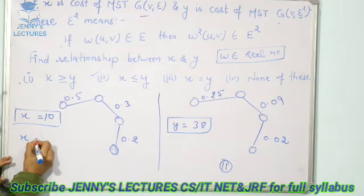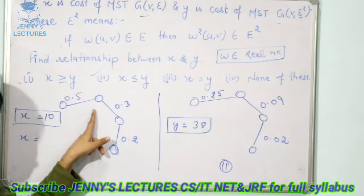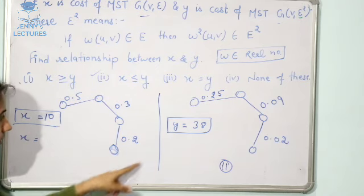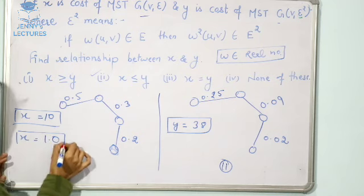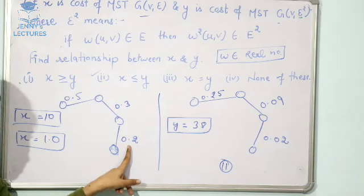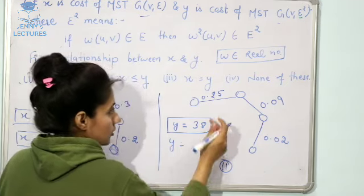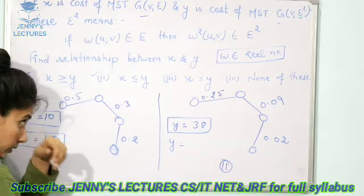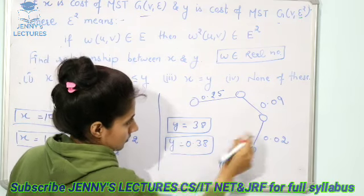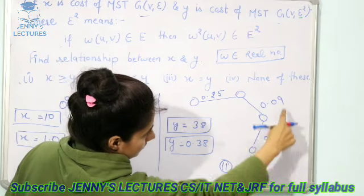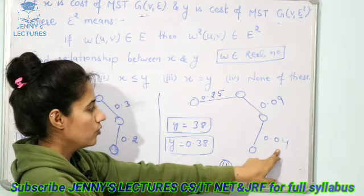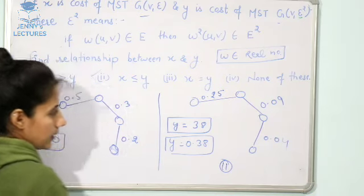Now, in second case, what would be the value of X? Find out the total of this. 0.5, 0.3, 0.8 plus 0.2 = 1. Find out Y. Just do the total. What would be the total? It would be 0.25 plus 0.09 plus 0.04 = 0.38.